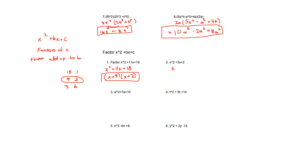Number 2, we have x squared plus 3x plus 2. Just like the previous problem, we find the factors of 2, which are just 2 and 1. So it's nice and simple — just x plus 2 times x plus 1 for number 2.